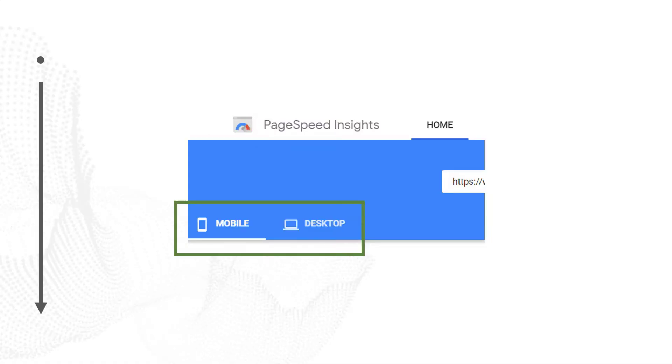As I mentioned, you can view PageSpeed Insights reports either from mobile or desktop. By default it will go to mobile, but there is a toggle at the top of the screen that allows you to flip from mobile to desktop. You can view the same metrics we've just gone through for mobile or for desktop for the page that you plugged in and analyzed.